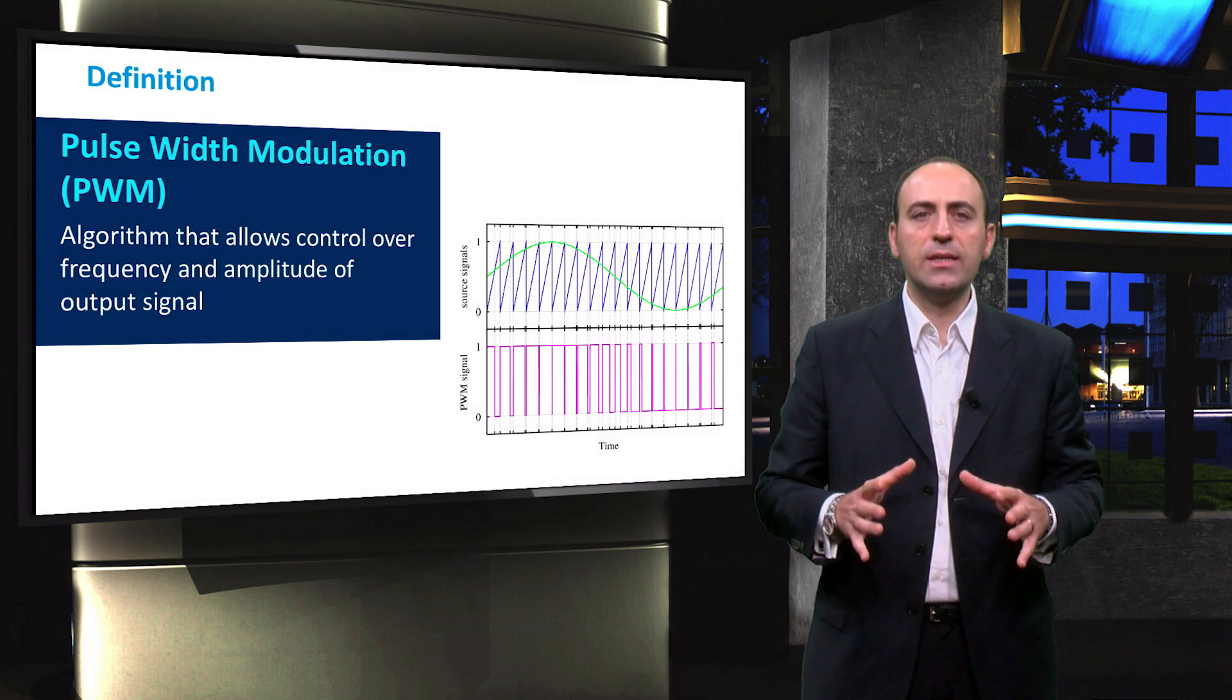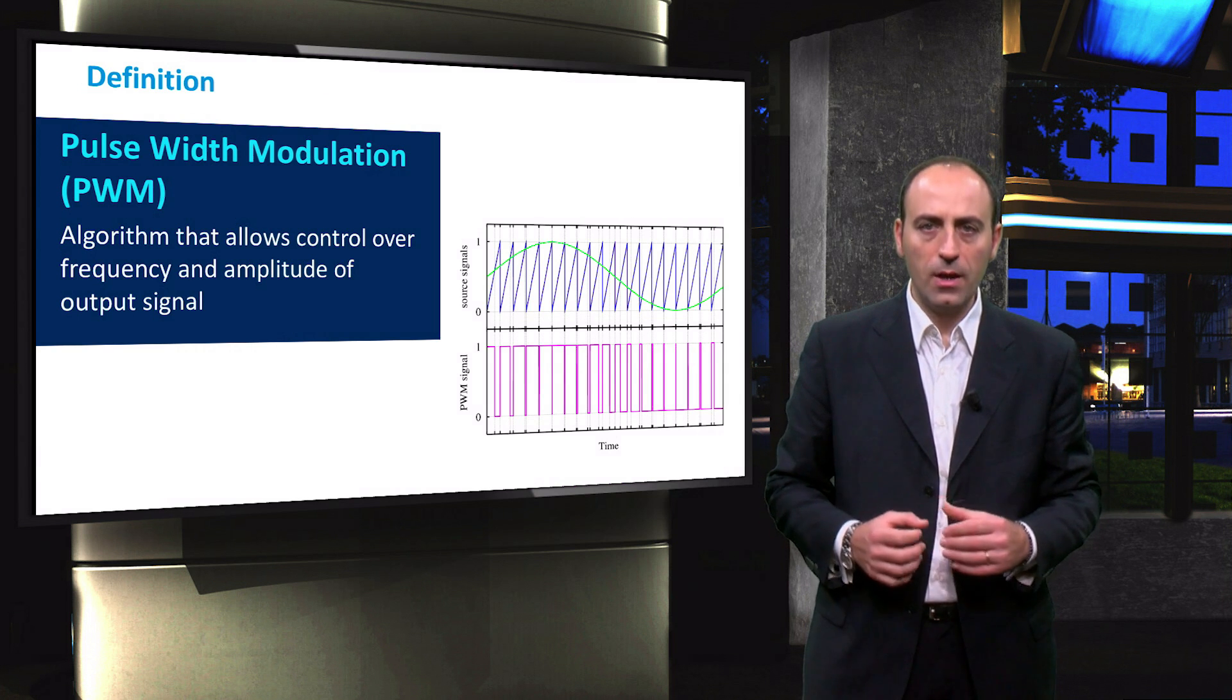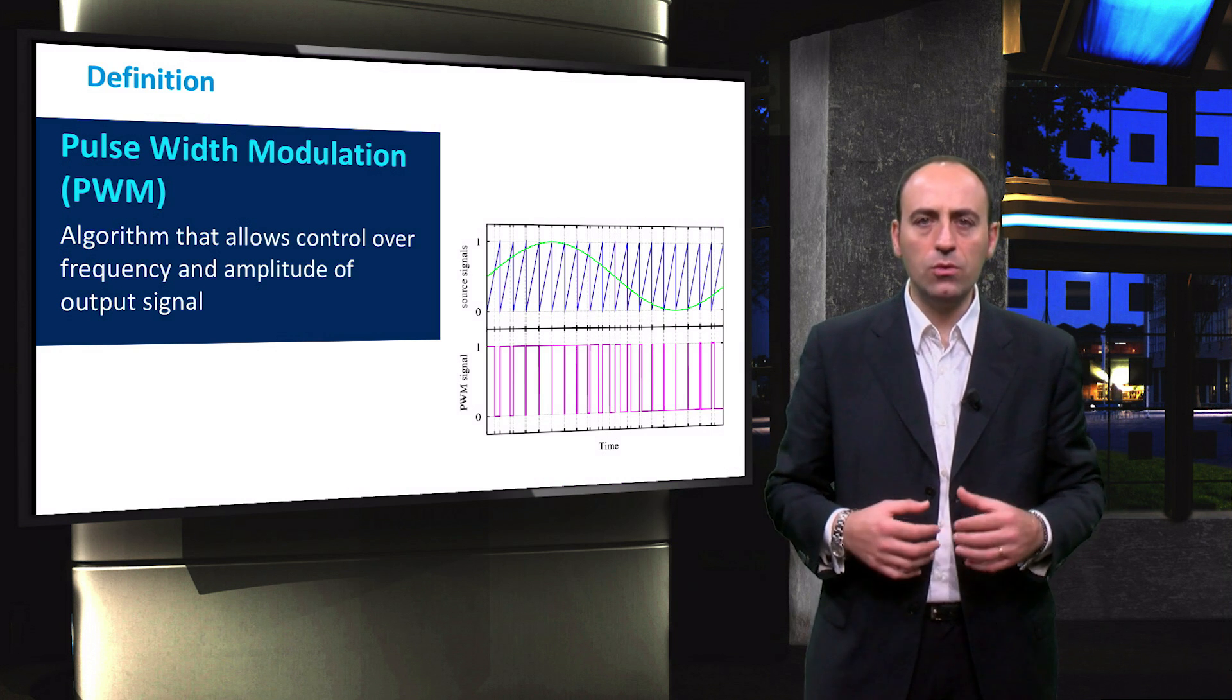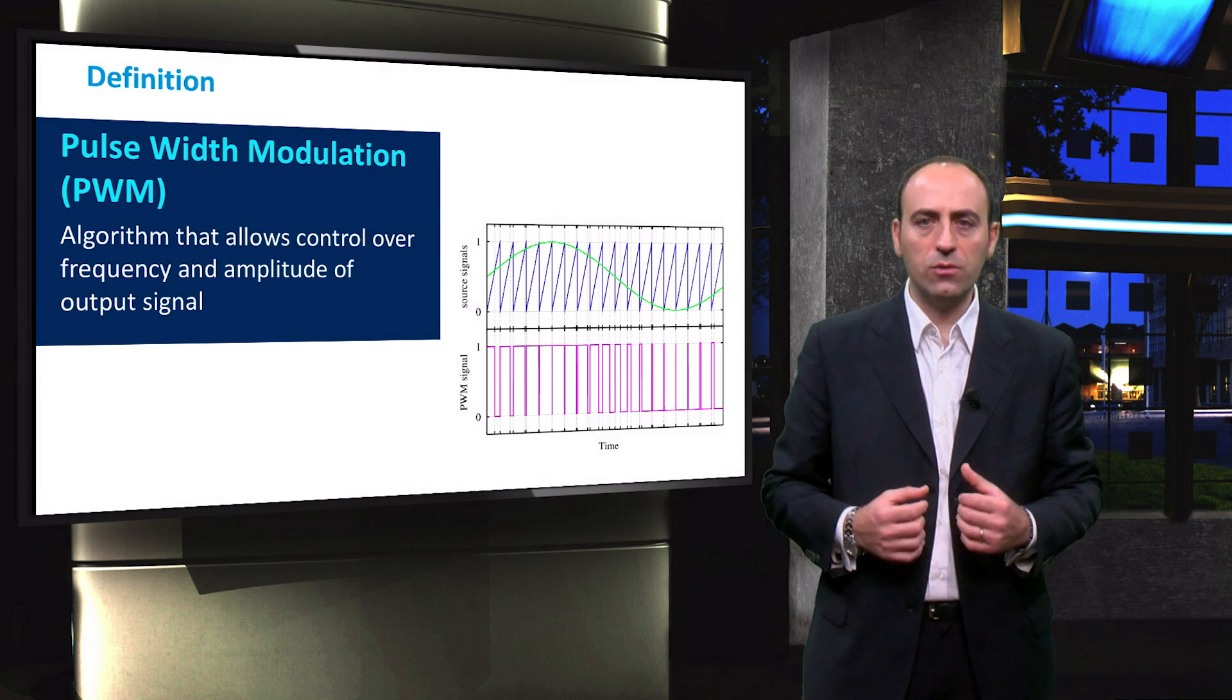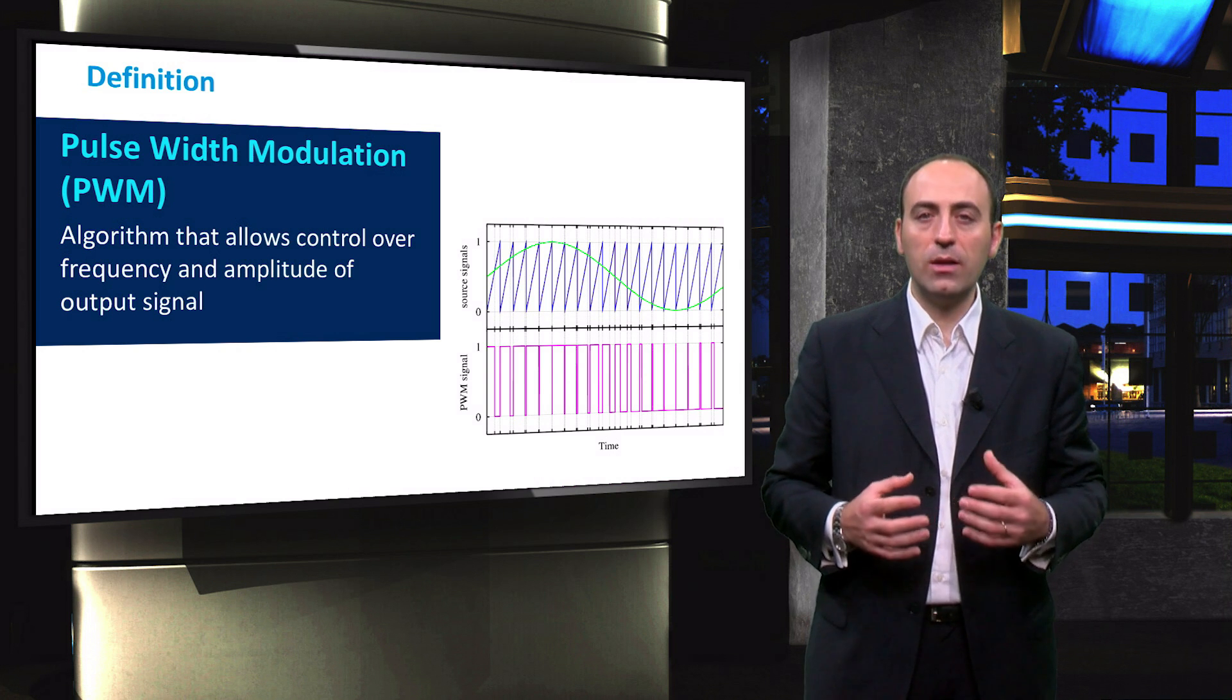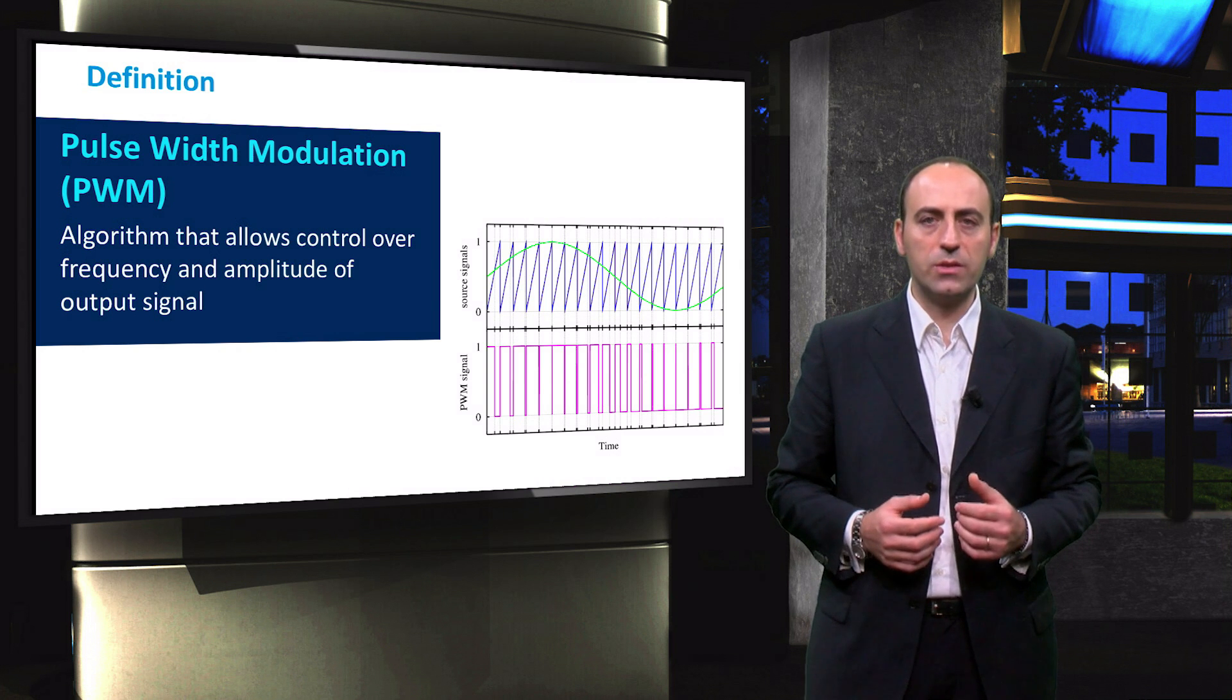Pulse Width Modulation is a control technique that acts over the switches of the inverter. It has the aim of controlling both the frequency and amplitude of the output signal. This control is performed by modulating on-off times of the switches, therefore the pulse's width. Apart from power electronics, PWM is widely used in digital electronics and signal processing.